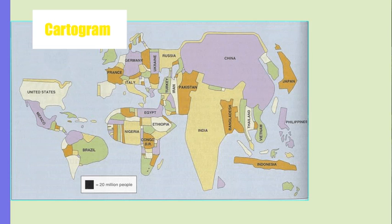Here's a cartogram that shows population size. The larger the size of the country reflects the size of the population. You can see India and China have very large populations, as do the United States, Brazil, Indonesia, and Japan. Russia is very small and even Canada is like a ribbon on top of the United States. This is a cartogram.